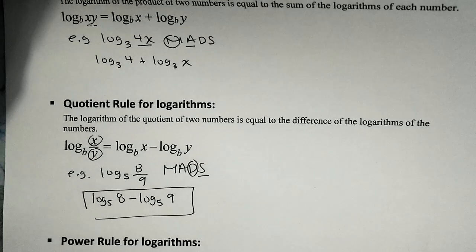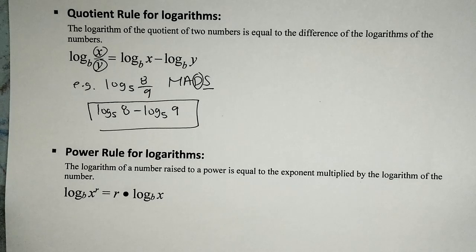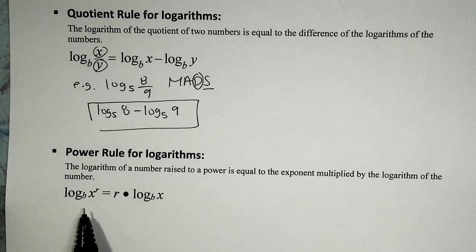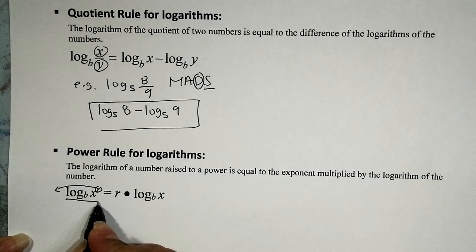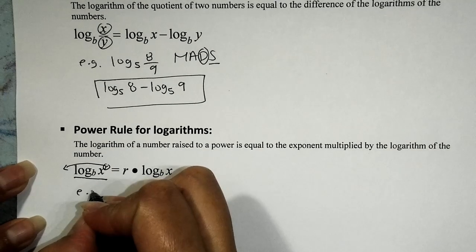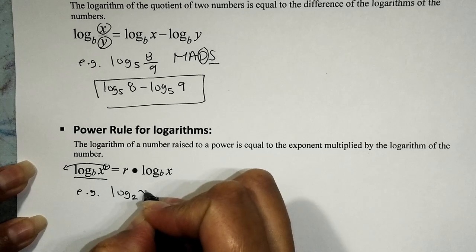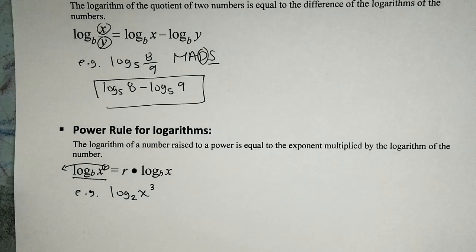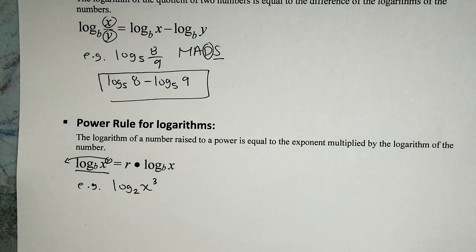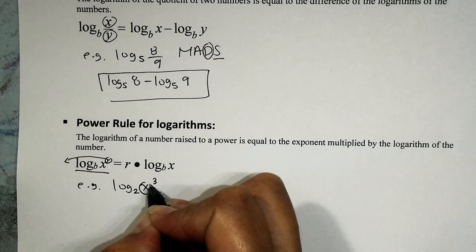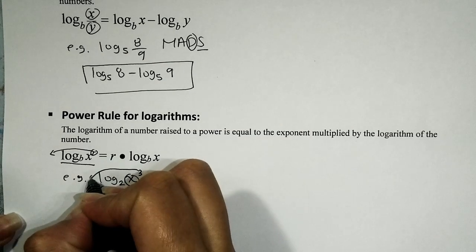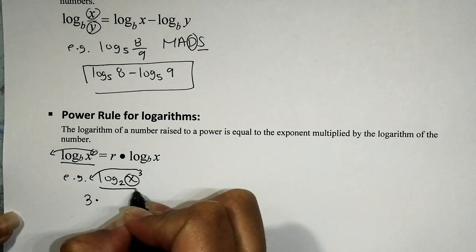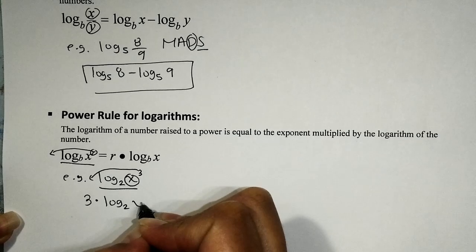Moving forward, let's continue with the power rule for logarithms. The power rule says: if the argument is raised to some power, we can bring the exponent down and multiply it by the leftover logarithm. For example, logarithm base 2 of x³ — is the argument raised to a power? Yes. So we bring the exponent down and multiply: 3 times logarithm base 2 of x.